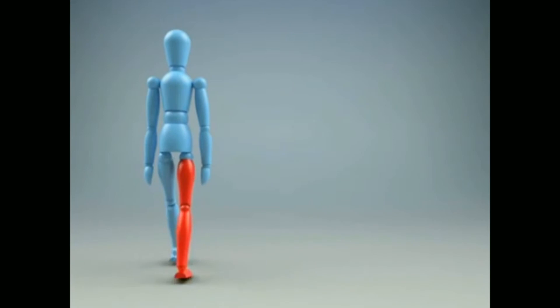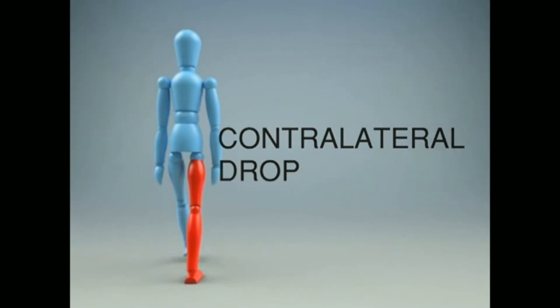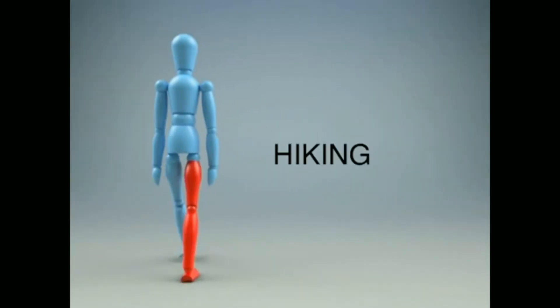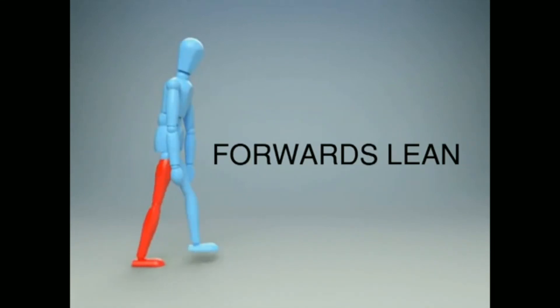When doing gait analysis, we might also notice symptoms like contralateral drop, where the opposite side of the hip drops during the loading response, or we might notice hiking, where the reference side of the hip lifts to help the leg swing forward. The sideways lean or lateral lean, as well as forwards lean and backwards lean, will also become obvious.